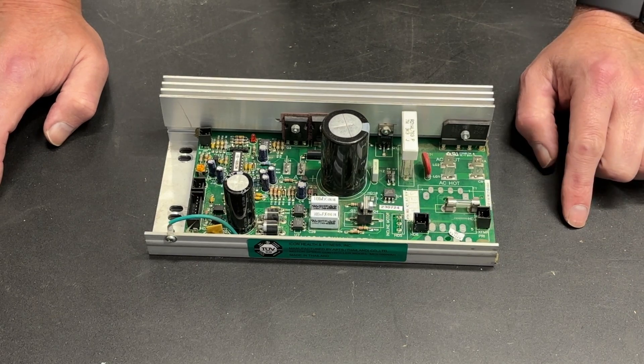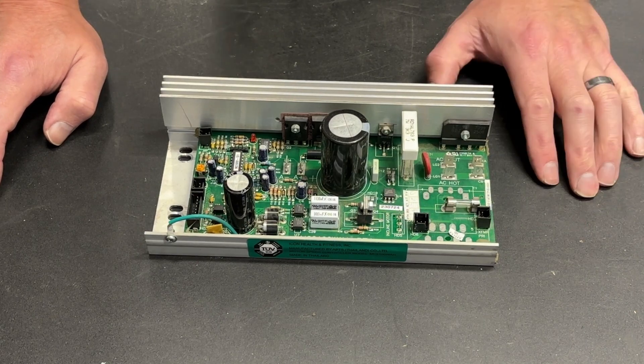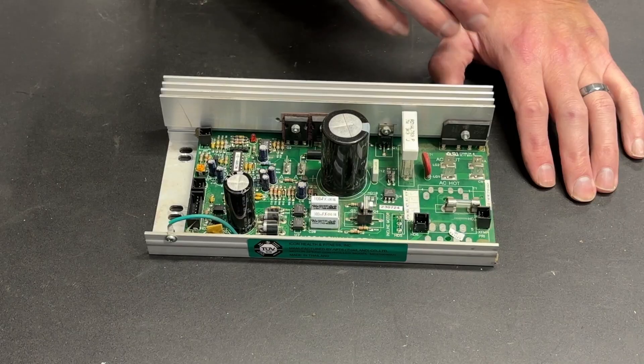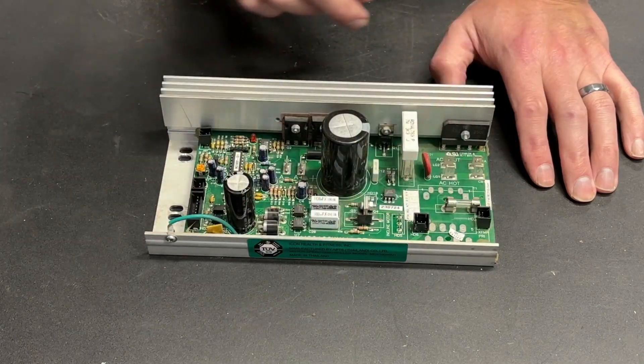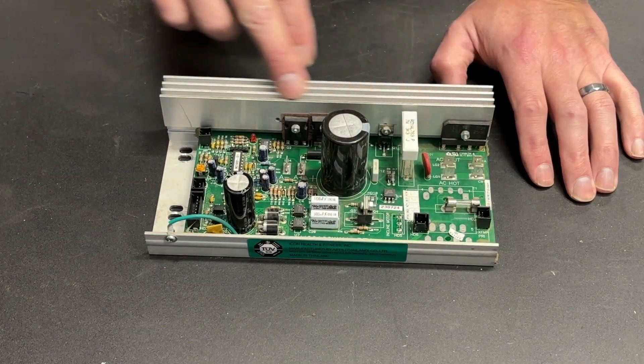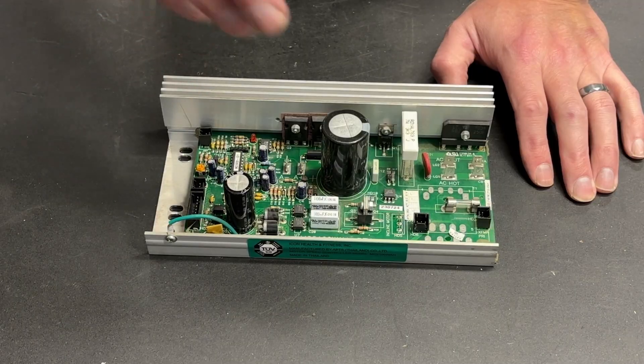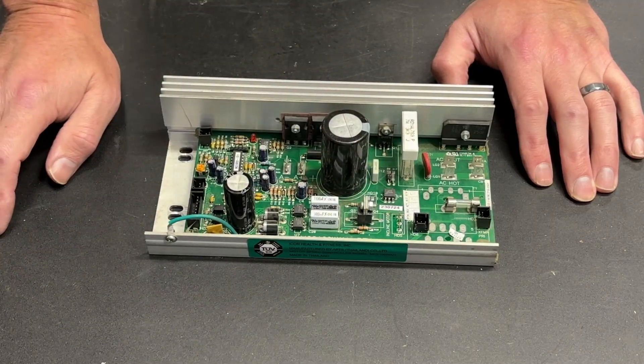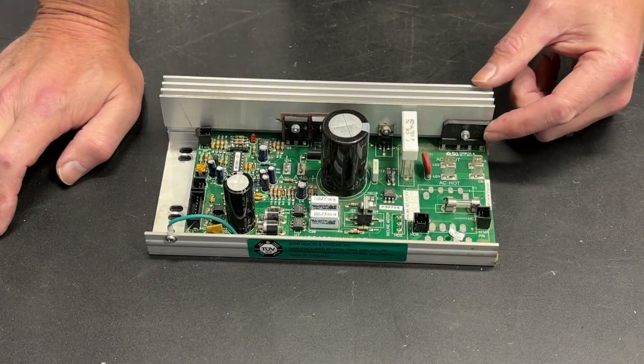Next component that typically fails on this, and interestingly enough, the rest of the components that have a tendency to fail on this board are your heat sink components. They are the components that are doing the heavy lifting, doing most of the work. This is the bridge rectifier.